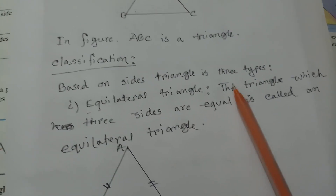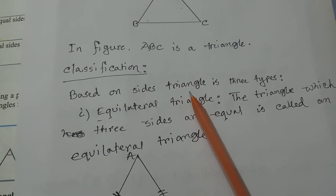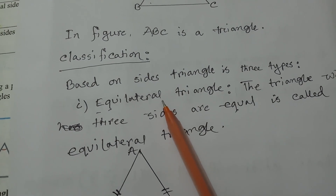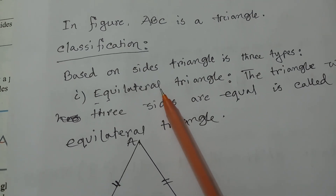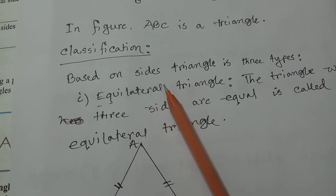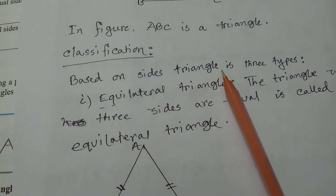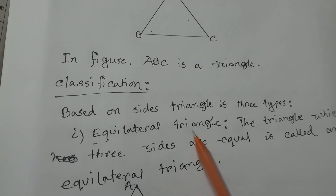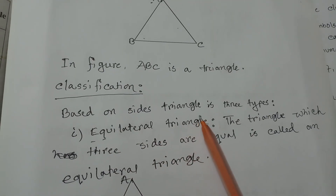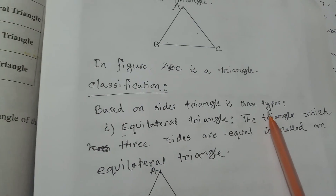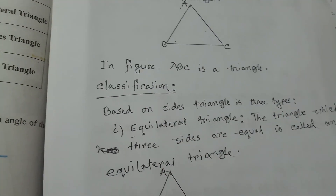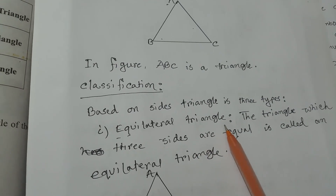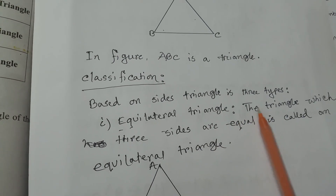Now, we will discuss about the classification of Triangle. Mainly, Triangle is classified into two types: based on the sides and angles. Based on sides, Triangle is three types, and based on angles, also three types.